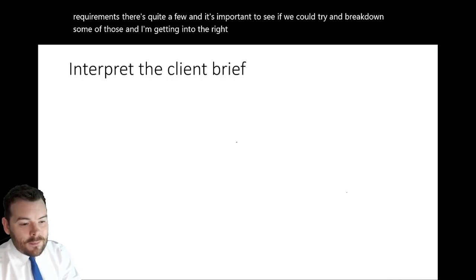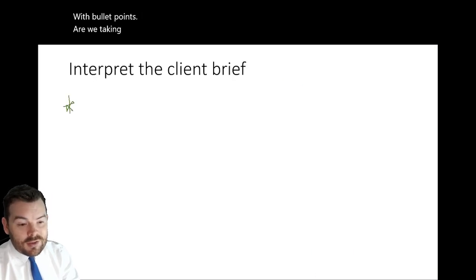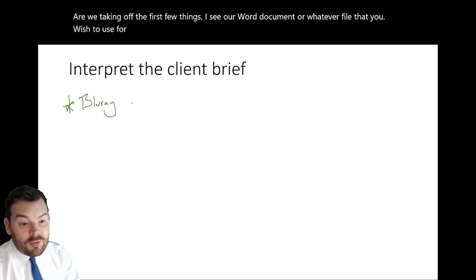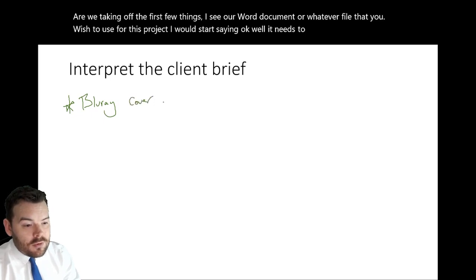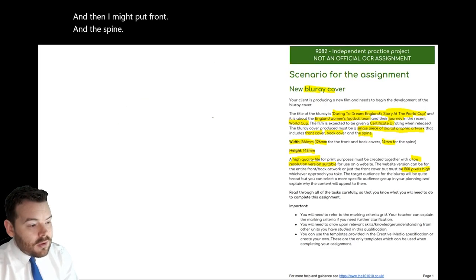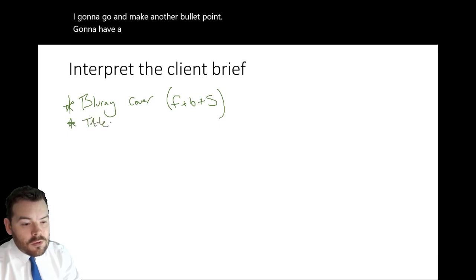So I head back onto that first page. The first thing I would do in this coursework is start with bullet points — taking off the first few things that I see in a Word document or whatever file you wish to use for this project. I would start saying, okay, it needs to be a Blu-ray cover — front, back, and the spine. Then I'm going to say that it's got a title, make another bullet point — it's going to have a title.